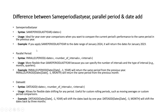That is the main difference between SAMEPERIODLASTYEAR and PARALLELPERIOD. PARALLELPERIOD syntax passes a date column, a number of intervals (like minus one, minus two), and an interval type such as month or year. PARALLELPERIOD gives flexibility — you can go back minus one, minus two, using month or year. With SAMEPERIODLASTYEAR you cannot pass a month interval or go back two years; it strictly goes back exactly one year.